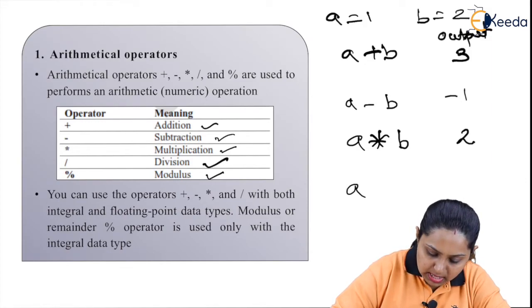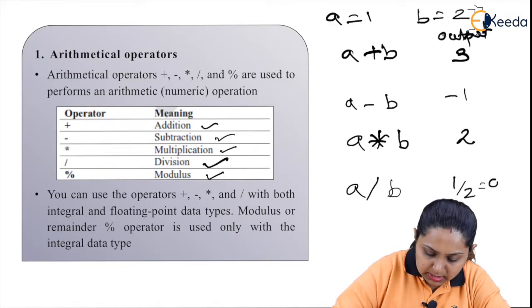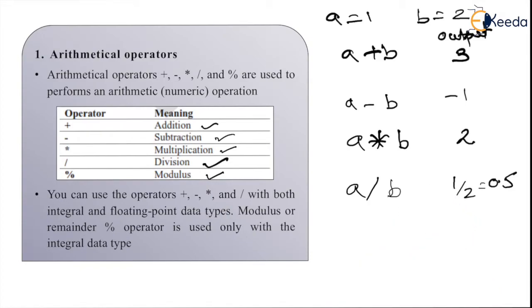When we say a divided by b, we'll get output in 1 by 2, that is in 0.5 format. But when we say a modulus of b, we'll get answer as 1.